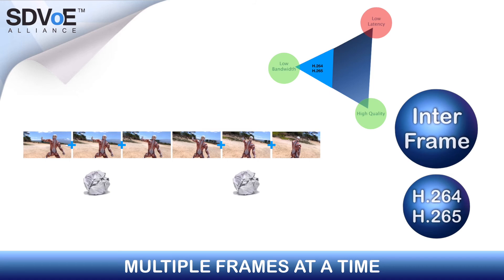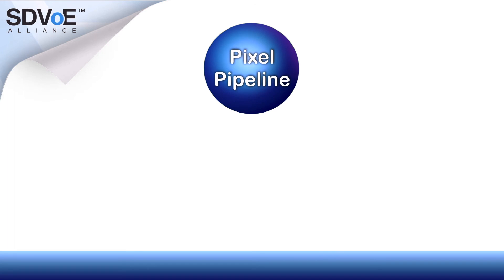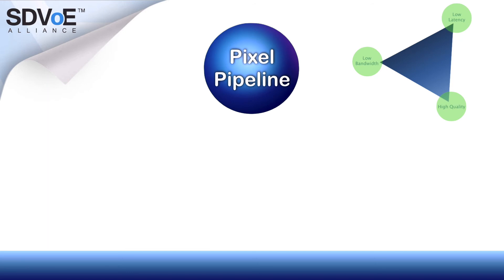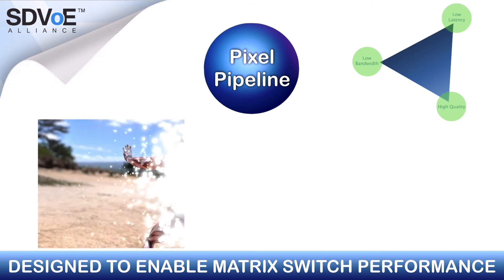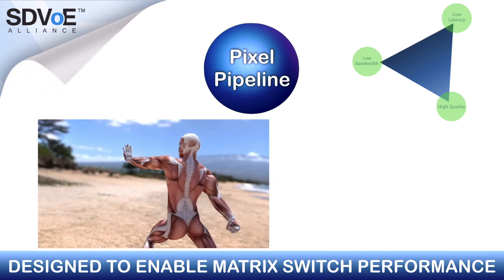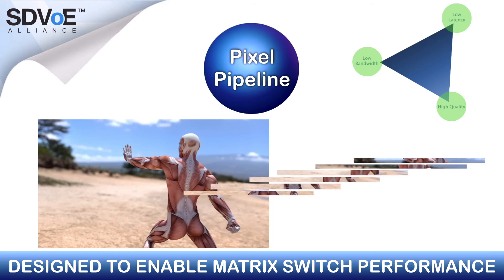The new class of codecs are called Pixel Pipeline. These codecs leverage the fact that HDMI video and 10 gig ethernet are very close in data rate, and are designed to enable matrix switch performance. Rather than wait on an entire frame of video, the codec starts encoding a few lines at a time, which totally minimises latency to a few lines, equating to only a few hundredths of a millisecond.